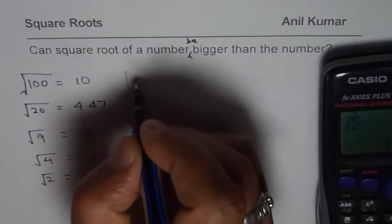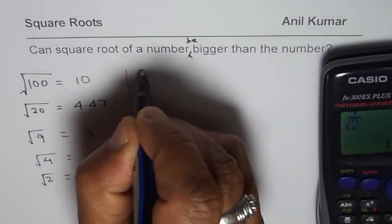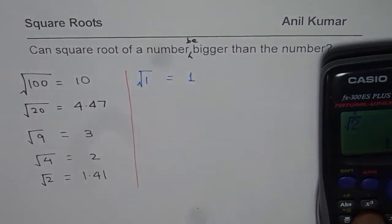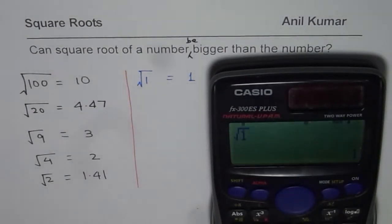Now, here is a very interesting number which is square root of 1. Square root of 1 is just 1, correct? Let's try it out. Square root of 1 equals to 1, right? So square root of 1 is 1.